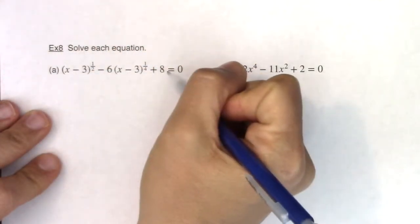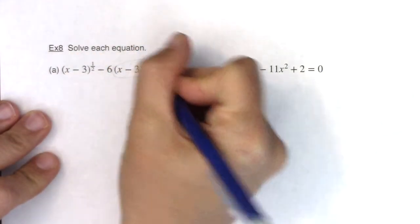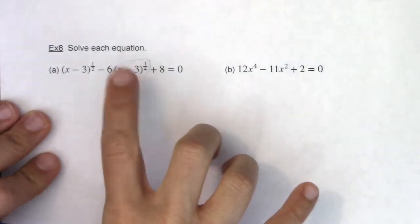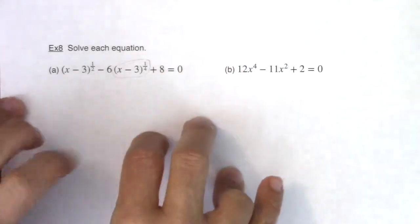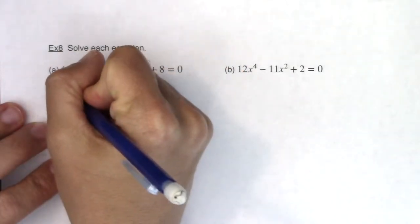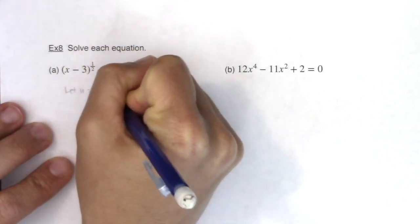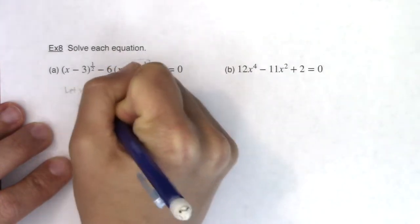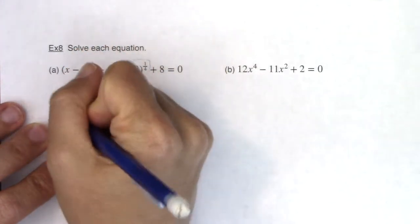So the first thing I want to do is get my u substitution. Now this is the exact equation that we did in example seven, but just to remind you, whatever your middle term is, whatever will eventually become your linear term, and I put that in quote marks, it's not linear just yet, that's going to be your u sub. So I'm going to let u equal x minus three to the one fourth, and then you need to figure out what u squared is equal to, and we established that it's x minus three to the one half.